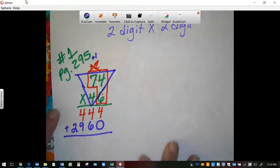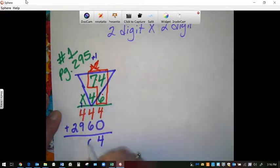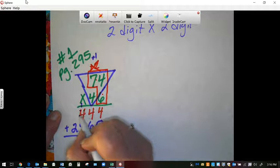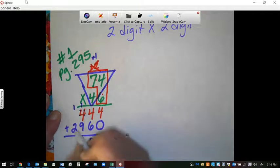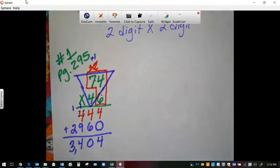And you add it together. 4 plus 0 is 4. 4 plus 6 is 10. Regroup. 9, 10, 11, 12, 13, 14. Regroup again. And 2 plus 1 is 3. And your final answer is 3,404.